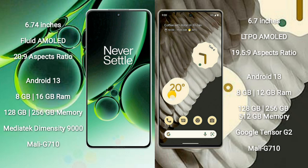Google Pixel 7 Pro comes with 8GB or 12GB RAM and 128GB, 256GB, or 512GB internal storage, powered by the Google Tensor G2 processor with a Mali-G710 GPU.